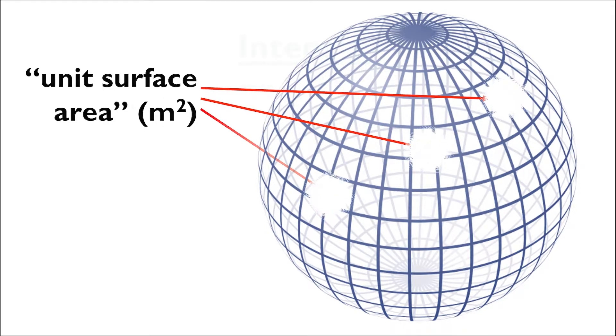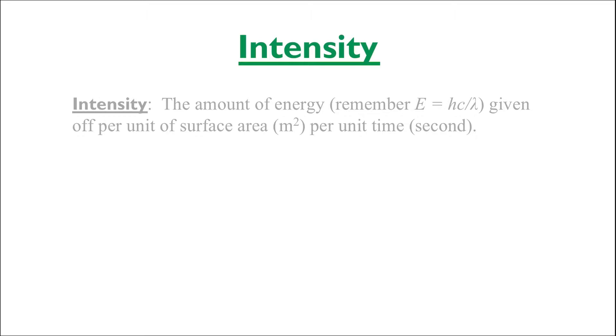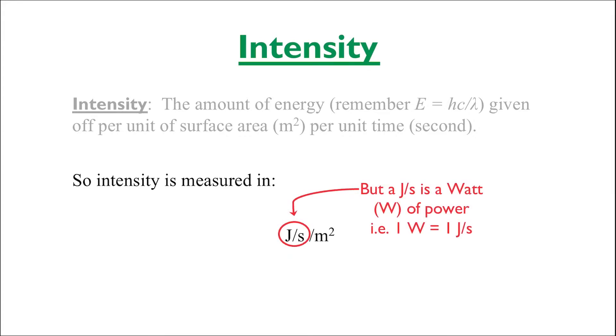Now since energy is measured in units of joules and area in meters squared and time in seconds, intensity has units of joules per second per meter squared. But a joule per second is also referred to as a watt of power. So we can say that intensity also has measurements made in units of watts per meter squared.